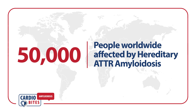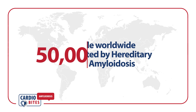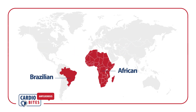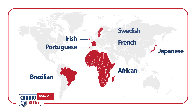Hereditary ATTR amyloidosis affects an estimated 50,000 people worldwide. While anyone may be at risk for hereditary ATTR, it is more common among individuals of African, Brazilian, French, Irish, Japanese, Portuguese, and Swedish descent.